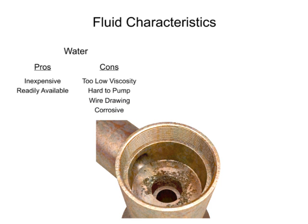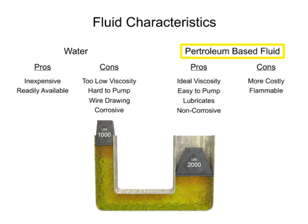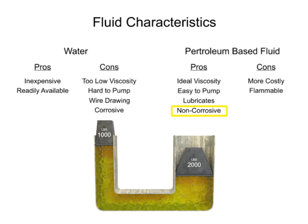Over time, petroleum-based hydraulic fluids have become much more cost-effective. It has a lower specific gravity than any other liquid and can be pumped with less power loss. It also lubricates as it works through the system and has little corrosive effects on metal machinery. Flammability is an issue, but with the development of synthetic oils, alternatives to water remain the preferred working fluid.